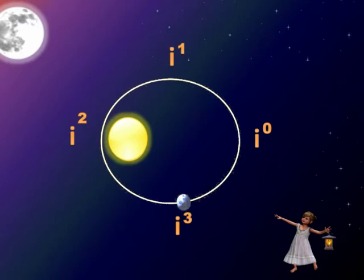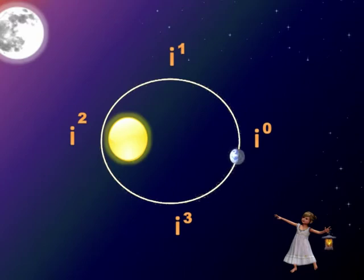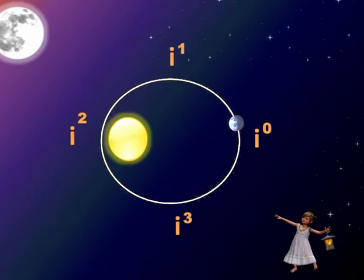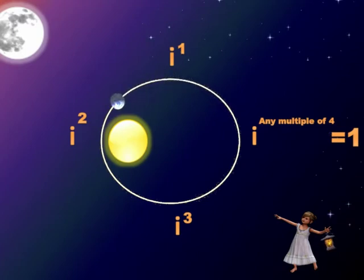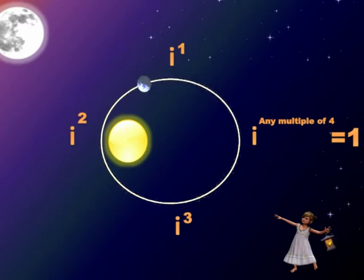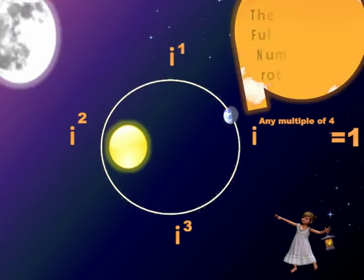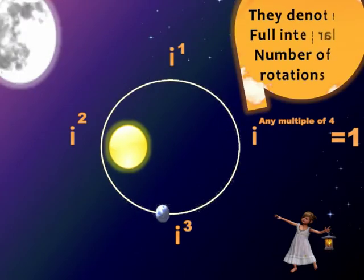In the world of complex numbers, i raised to 0 equals 1 — this indicates the starting point of rotation. i raised to 1 indicates a rotation by 90 degrees and equals i. i raised to 2 indicates a rotation by 180 degrees, i raised to 3 indicates a rotation by 270 degrees, and i raised to 4 indicates a full rotation of 360 degrees. Any multiple of 4 — i raised to 8, 12, 16 — will complete a full circle.